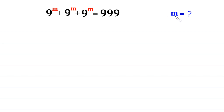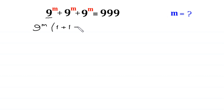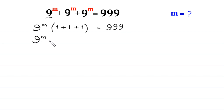Let's start by factoring out 9 to the power m from this expression. 9 to the power m as a common factor, and in brackets left 1 plus 1 plus 1 is equal to 999. Next, 9 to the power m times 3 is equal to 999.